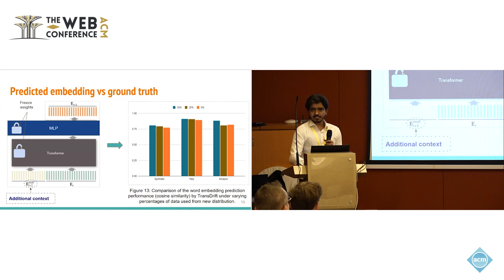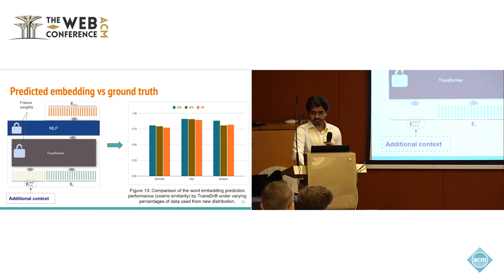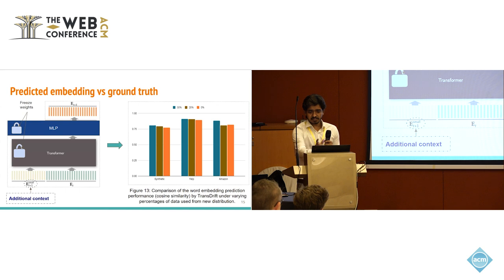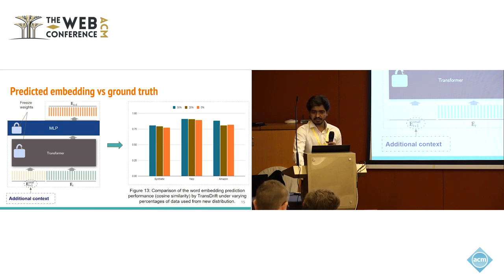As mentioned earlier, if we have some small data from the shifted distribution, we don't want to waste it. So we train ET+1 small — the embedding trained on this small data from the shifted distribution — and provide it to the model. In this experiment shown in Figure 3, we trained ET+1 small on 30% and 20% of data from the shifted distribution and passed it to our model, and also tested the 0% case where no ET+1 small is passed. We can see the improvement in performance when the model is shown some data from the latest distribution.